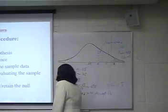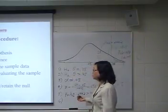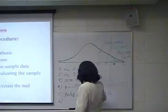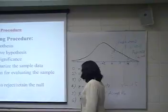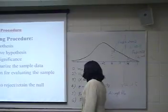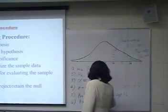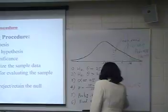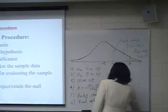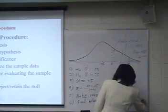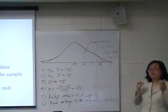Step six: we draw a conclusion. Our conclusion is that Fred belongs to the population without ESP. The null hypothesis — that Fred belongs to the population without ESP — is accepted because his probability was greater than 0.05, our bottom line.